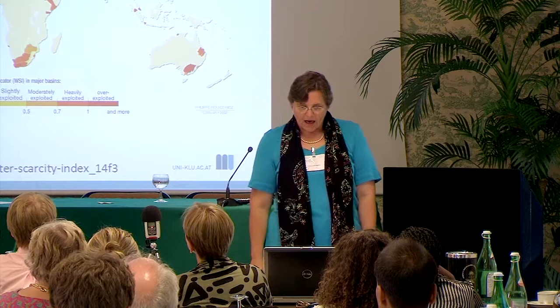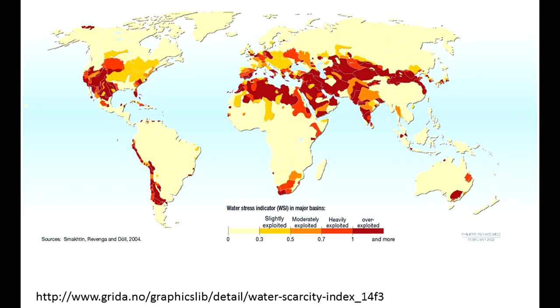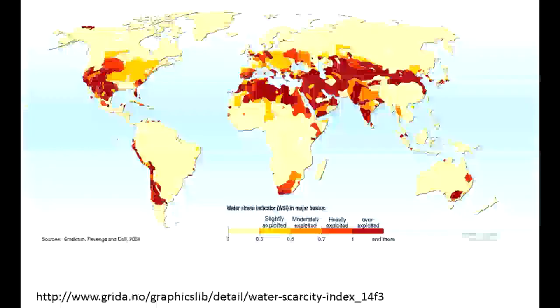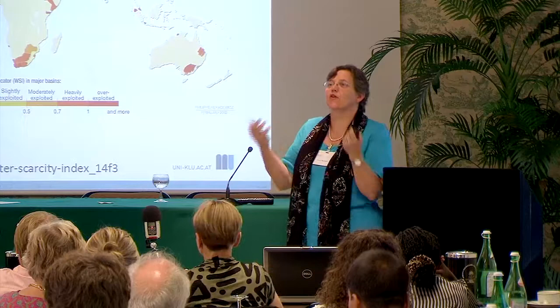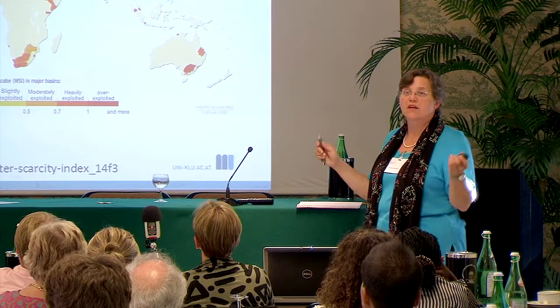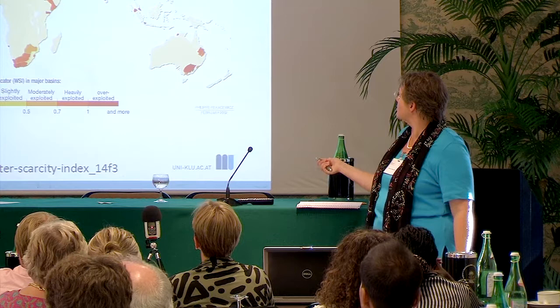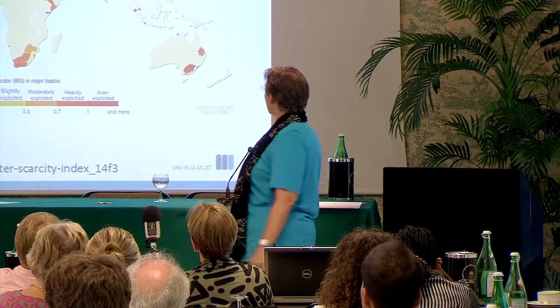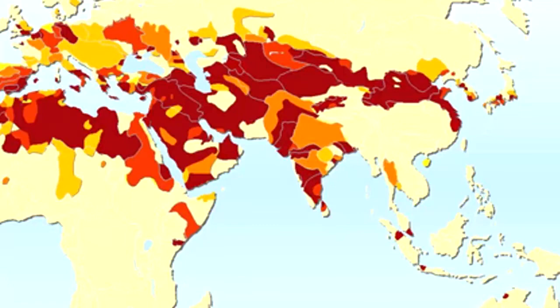The water scarcity index and the water stress indicator show how exploited different regions are. Regions with natural abundance of rain are not under water stress. India is under severe water stress, as is the north of China.